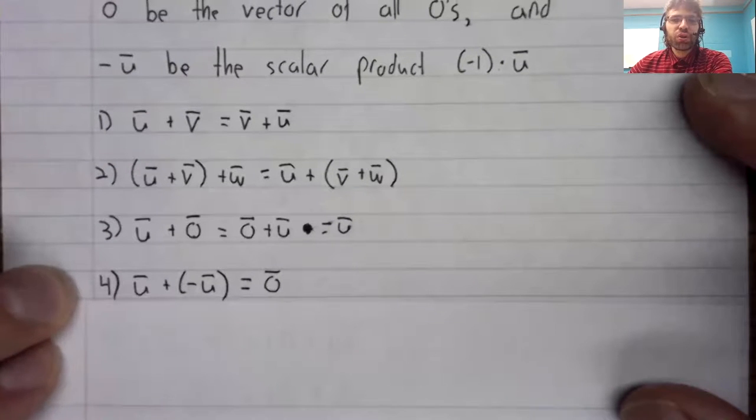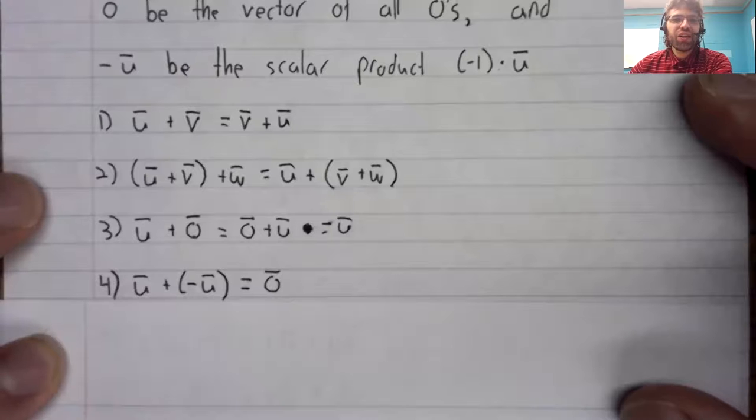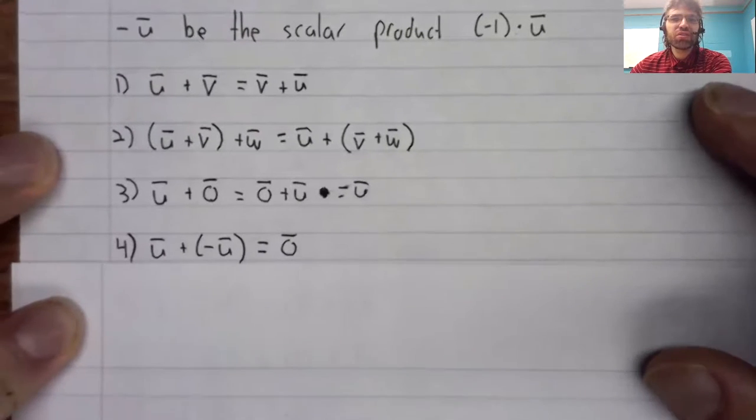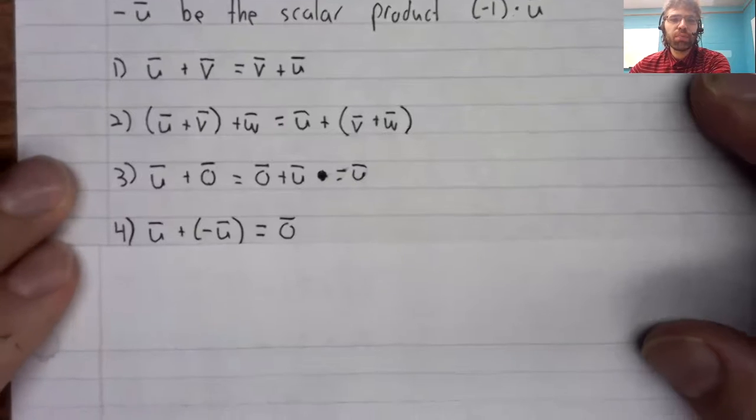A vector plus its additive inverse is the zero vector. This is true for real numbers.